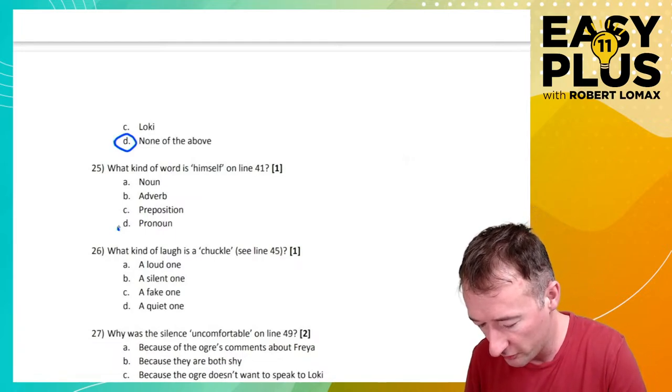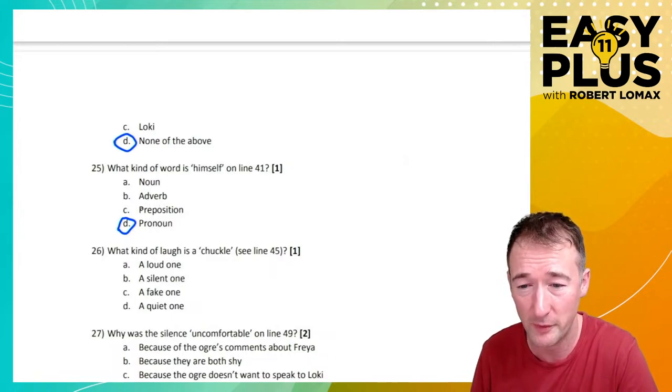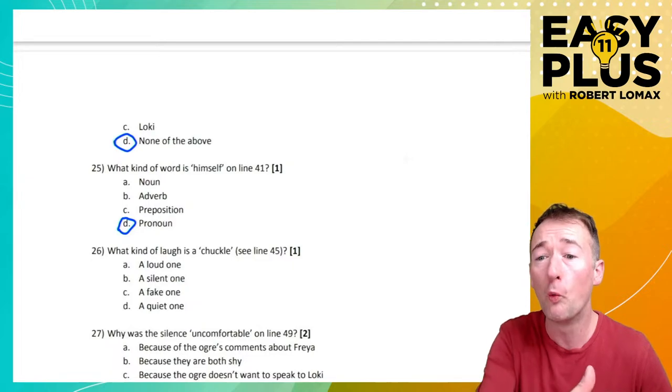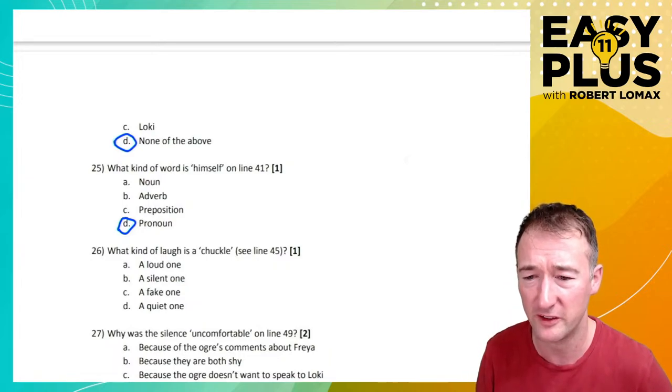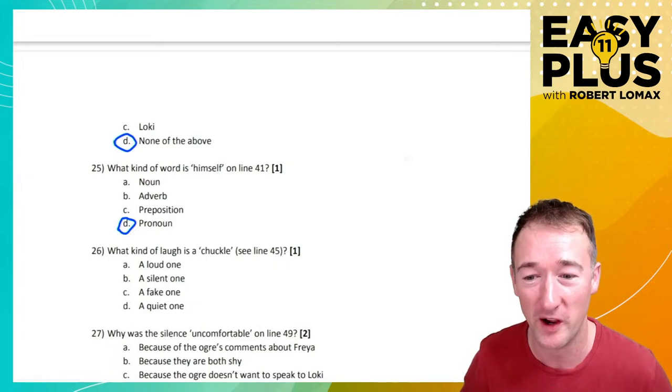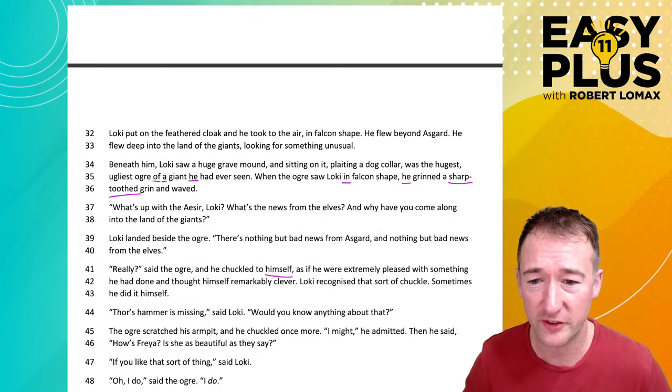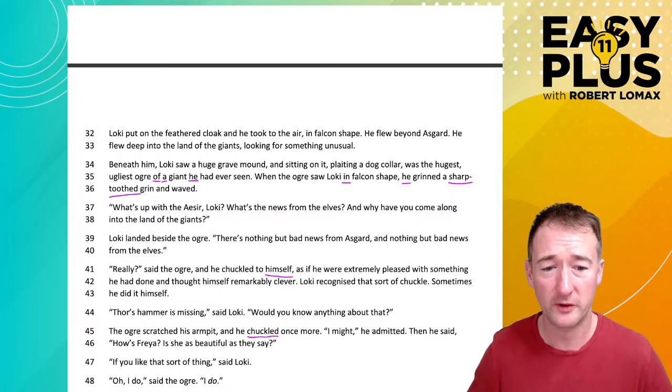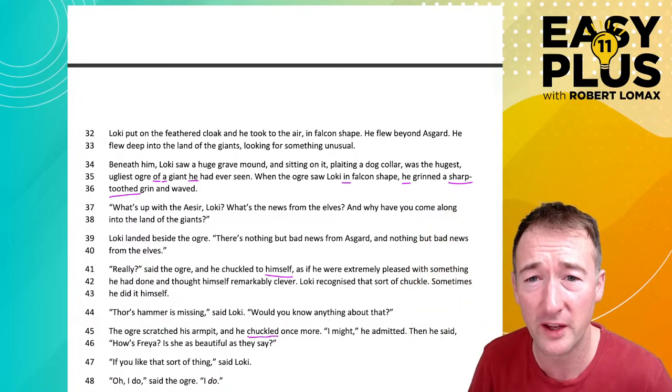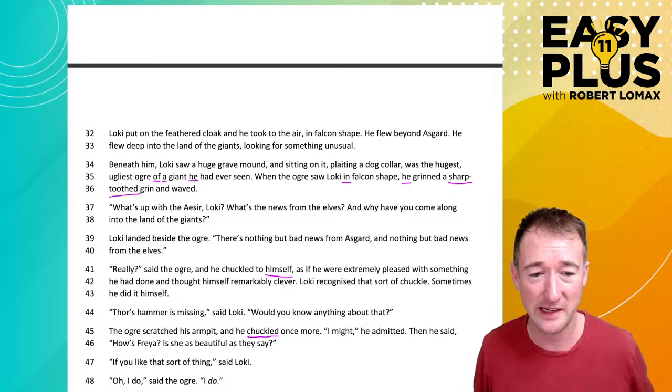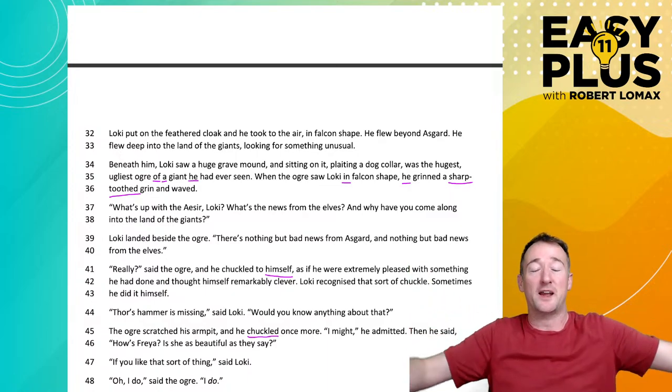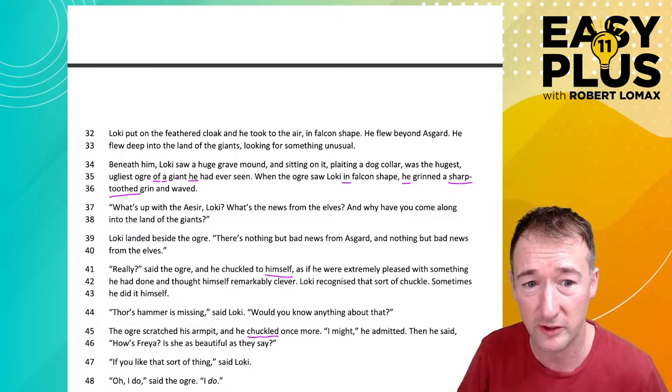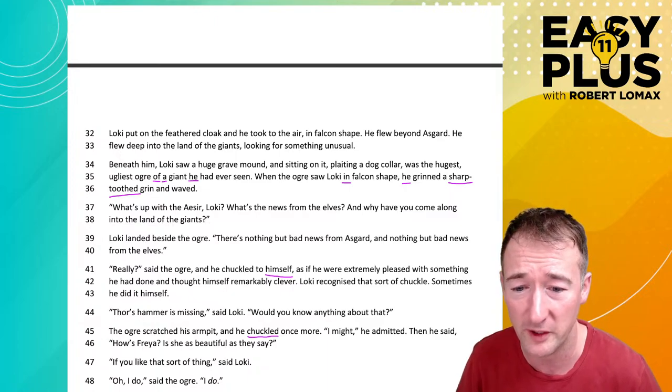That's quite straightforward. Because we know positively that it is a pronoun, the others aren't relevant. But it isn't a noun, it isn't an adverb, and it isn't a preposition. Preposition, you know, he went towards the haystack. She is sitting on the haystack. That kind of thing. These prepositions. This isn't to do with that. It isn't describing the location of something relevant to something else. What kind of a laugh is a chuckle? See line 45. A loud one, a silent one. A fake one, a quiet one. Let's have a look. The ogre scratched his armpit. Charming. And he chuckled once more. It's really charming. And he chuckled once more. You know who loves having their armpits scratched? It's Dimitri. If I sit him on my lap, and then I lean him back, and I put my hands under his armpits, and I go, he just sticks his arms out to the side, all the way out like that, and just leans back in ecstasy as I tickle his armpits.